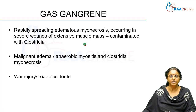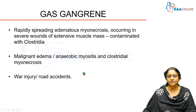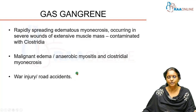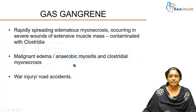This condition is usually seen in war injuries and road accidents, where soil or pieces of clothing — or in the case of a bomb blast, shrapnel fragments — enter deep inside the patient. Other names for gas gangrene are malignant edema, anaerobic myositis, and clostridial myonecrosis. All these terms imply the same clinical picture.